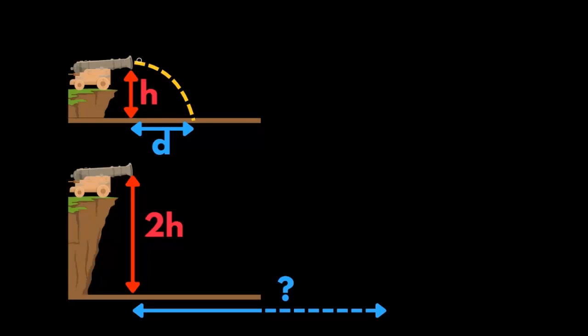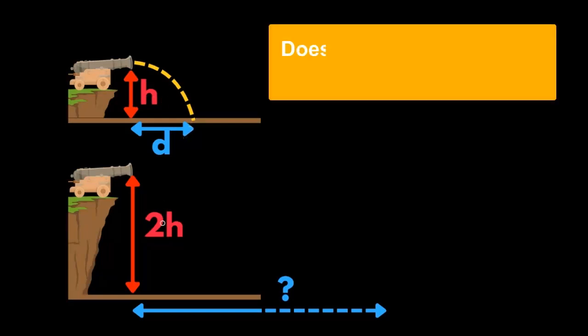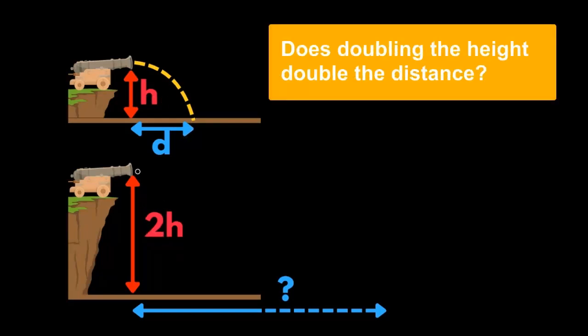Here we have a cannon launching a cannonball horizontally to the ground. We launch it at a height of H and it lands at a distance of D. So the question is, if we were to double the height of the cannon, will the cannonball land at double the distance? To answer this question, we need to understand how projectiles work.